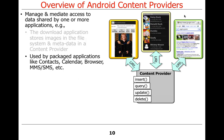There are lots of other examples of content providers used by packaged Android applications. Things like the calendar, which manages your events; contacts, which keeps track of names, phone numbers, addresses, emails, pictures, and ringtones; the browser, which stores bookmarks and history; and MMS/SMS — text messages — are all stored in content providers.